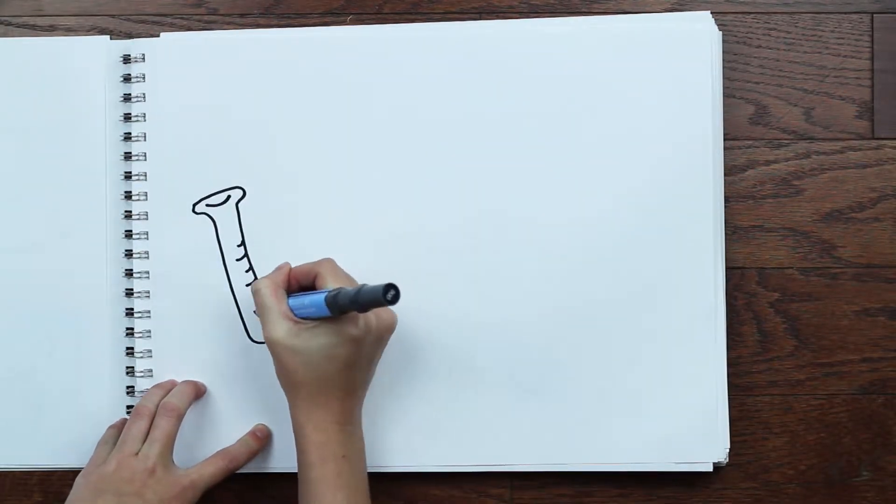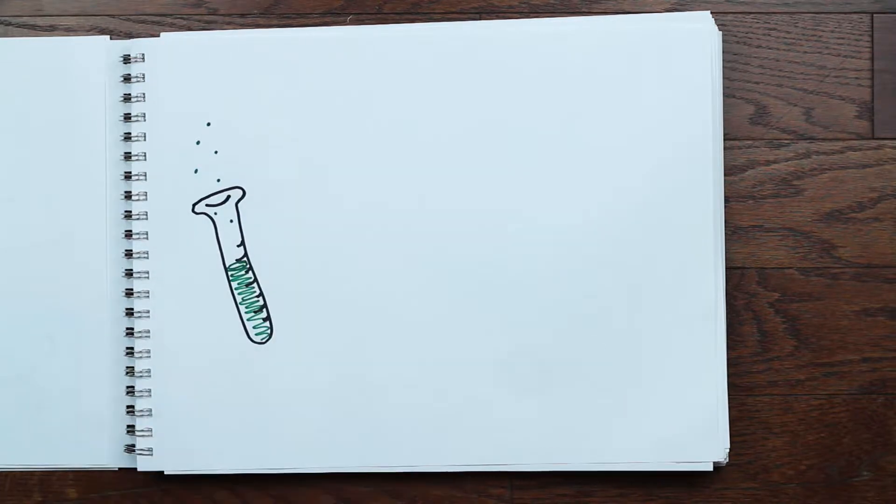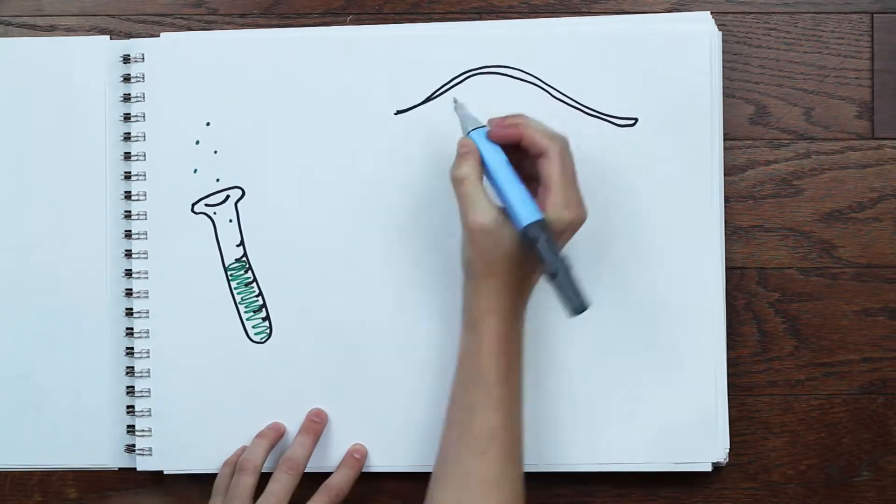Dopamine is the reward chemical. It makes you feel exhilarated and super excited. Two things to know about dopamine. One, it loses its effectiveness over time.